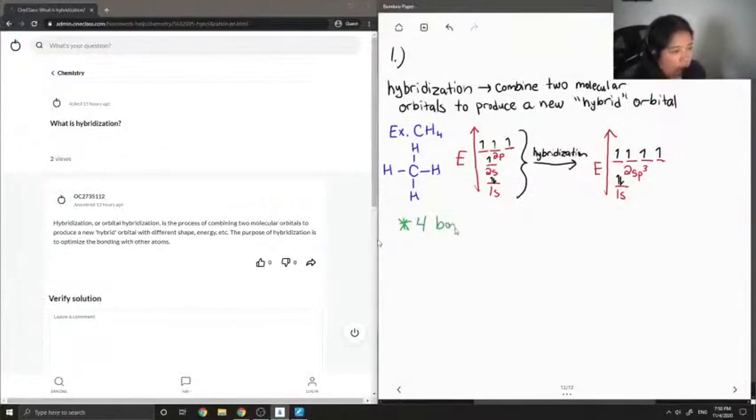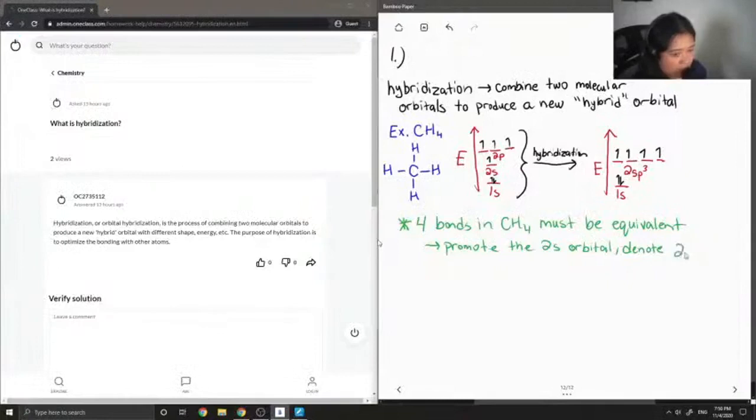So since we know that the four bonds in CH4 must be equivalent, therefore we have to promote the 2s orbital to make it a higher energy, and we have to demote the p3 orbitals to make them have a lower energy, so basically so that they meet up in the middle.